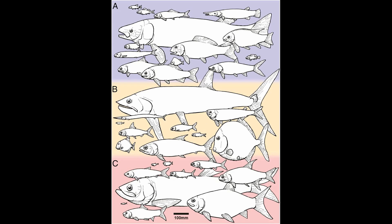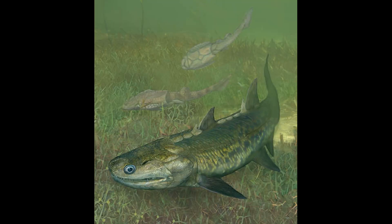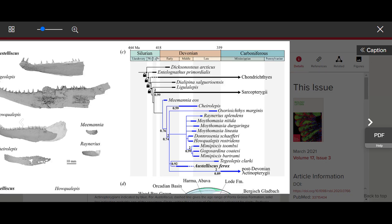Flipping to the Actinopterygian side, we find a number of very basal fish. Meemannia, when initially described in 2006, was considered to be an early lobe-finned fish, but a more recent analysis published in 2016 concluded that Meemannia is on the stem of the ray-finned side. Dialipina, from the early Devonian, is a member of the extinct order Paleonisciformes, which existed from the late Silurian to the Cretaceous. They are largely considered to be paraphyletic, with some, like Dialipina, being stem osteichthians, some appearing to be stem actinopterygians, and others being crown actinopterygians.